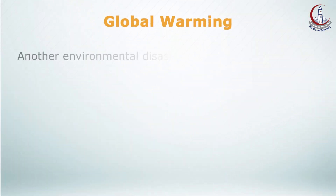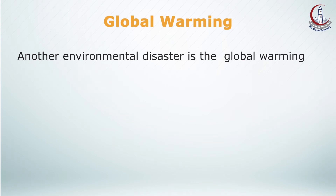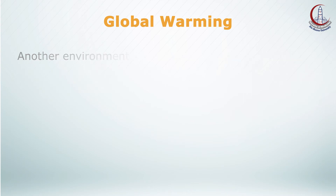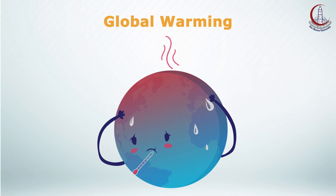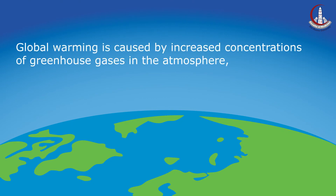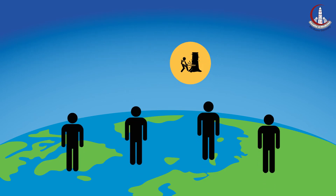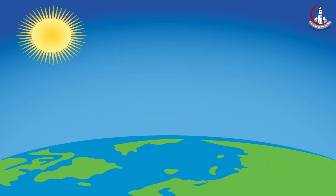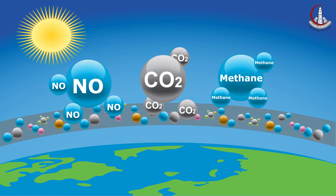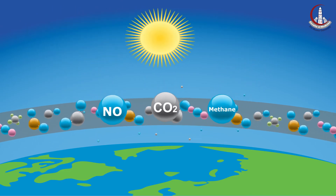Another environmental disaster is global warming. Global warming is a continuing rise in the average temperature of Earth's atmosphere and oceans. It is caused by increasing concentrations of greenhouse gases in the atmosphere resulting from human activities such as deforestation and burning of fossil fuels. Greenhouse gases are air pollutants that trap heat and light coming from the sun in the Earth's atmosphere by forming a layer surrounding the Earth, thus increasing its temperature.